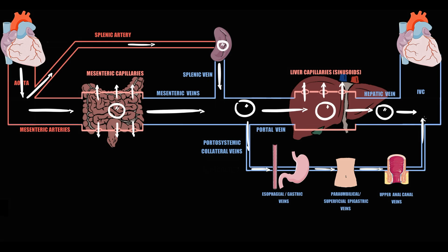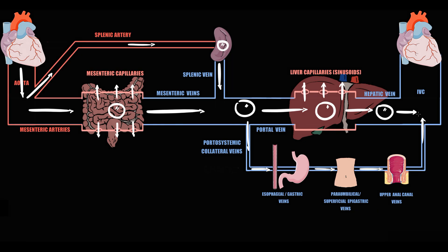An adult person in normal conditions practically does not use portosystemic collateral vessels, because the adult has a portal vein pathway that provides massive blood flow. From the inferior vena cava, blood goes into the right atrium and right ventricle of the heart, then crosses pulmonary circulation and goes into the left atrium and left ventricle, from which the heart again pushes blood into the aorta — and this cycle repeats over and over again.